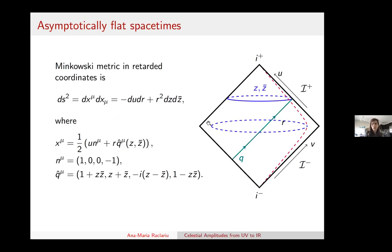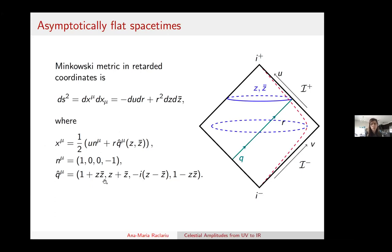The setting is an asymptotically flat spacetime, shown here in the Penrose diagram. This is a class of spacetimes which look like Minkowski space near the boundary at infinity. Here we have the standard Minkowski metric, and it's convenient to do a change of coordinates to so-called retarded coordinates U, R, Z, and Z-bar. Each of these vectors can be written as a linear combination of two null vectors. R is the standard radial coordinate, U is the retarded time equal to T minus R, and Z and Z-bar are angles on the sphere obtained by stereographic projection.